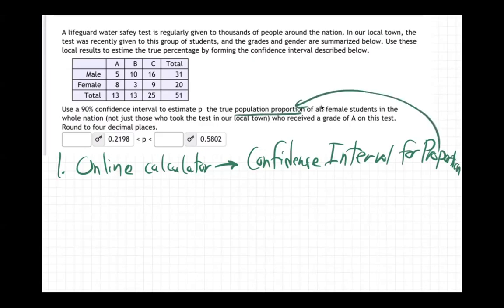So step two, when you do it, it'll ask you for n, x, and CL. n is always the total number. x is the ones that did what you want, the ones you want. And CL has got to be a decimal confidence level.